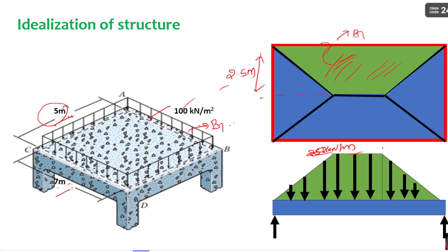Whatever you observe in practice, load distribution takes the form of either one-way slab or two-way slab systems. These are simple examples I considered to explain the load distribution of a structure. If you find anything useful, please comment in the comment box and I will address it. This is part of the theory versus practical series, which is very important for civil engineers. Thank you for watching.